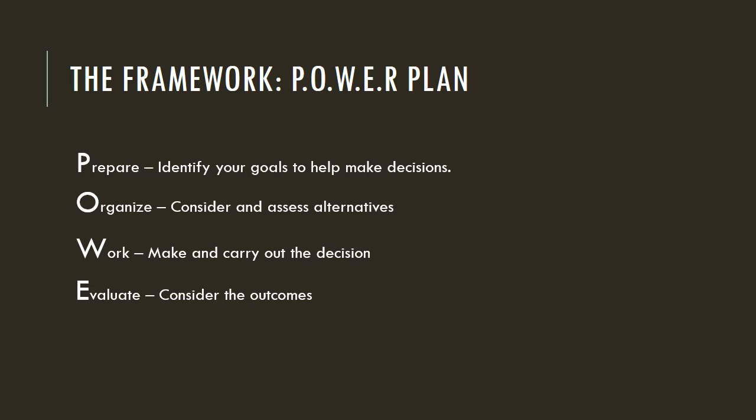Last but definitely not least is rethink — reconsider your goals and your options. We can get to most places by multiple routes: the fastest and most direct, or the longer, more scenic route. Both take us to our destination. There's not just one way to do everything, and making the wrong decision doesn't mean you totally screwed up. It's just taking you a little longer to get to your ultimate goal, and that's perfectly fine.